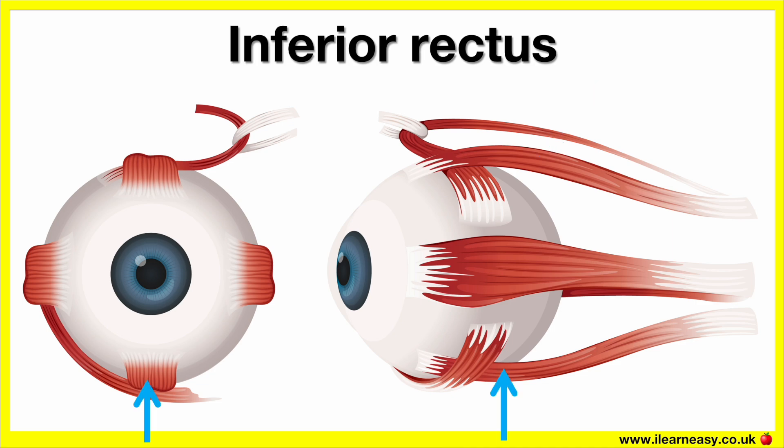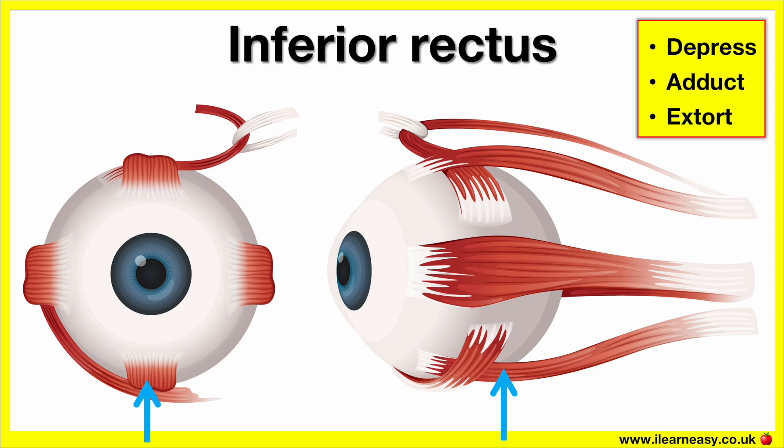The origin of the inferior rectus is the common tendinous ring. The insertion of the inferior rectus is the inferior part of the sclera. The actions of the inferior rectus are that it depresses, abducts, and extorts. This means that it helps us to look down and in.